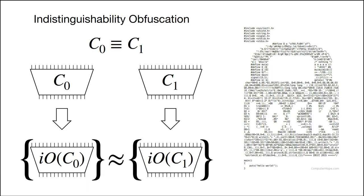Before we get into the details of our work, I want to give a brief introduction about the primitive. Indistinguishability obfuscation is the task of taking a piece of software and scrambling it in such a way that it becomes unintelligible to any external observer, but at the same time, the functionality of the circuit should be preserved. If we input any string to such a program, it should return the output of the original circuit. The security we require is that for any two functionally equivalent circuits C0 and C1, their obfuscations should be computationally indistinguishable from each other.